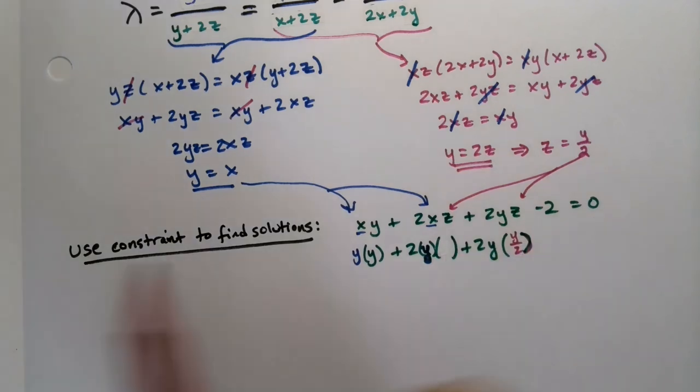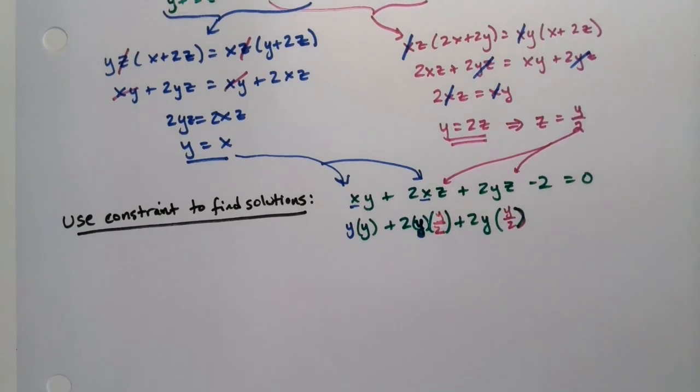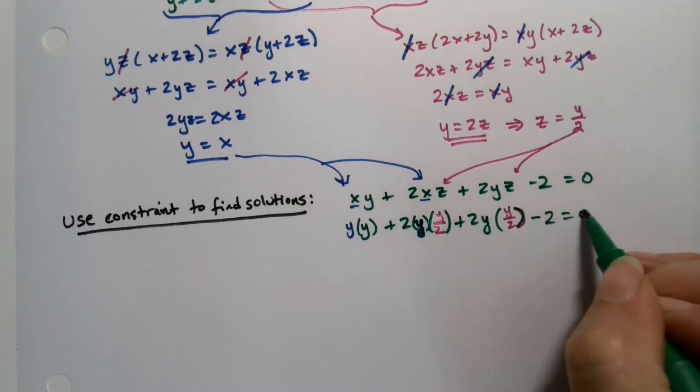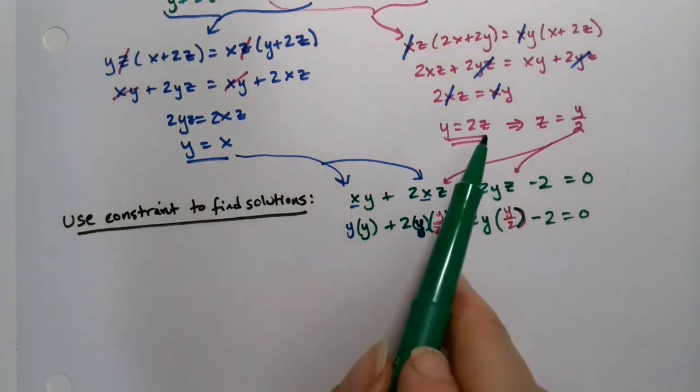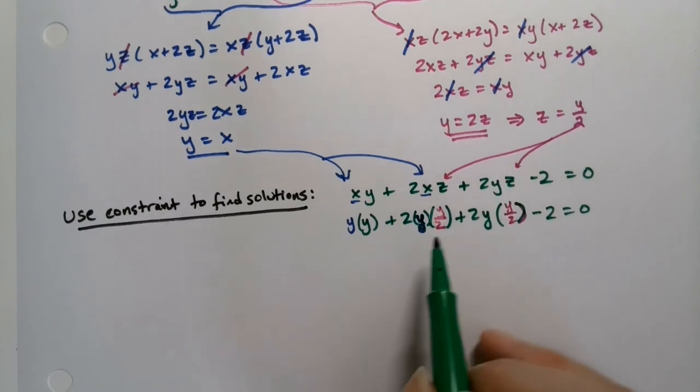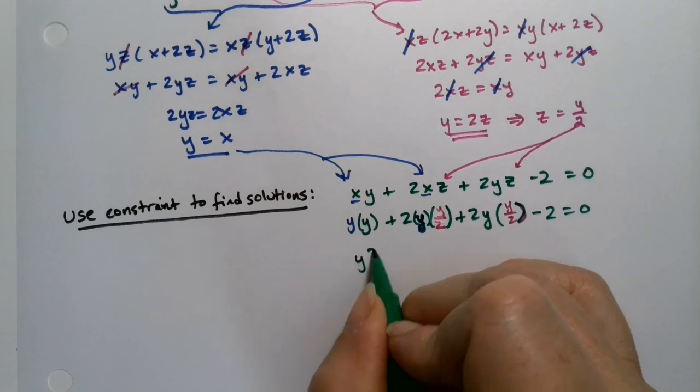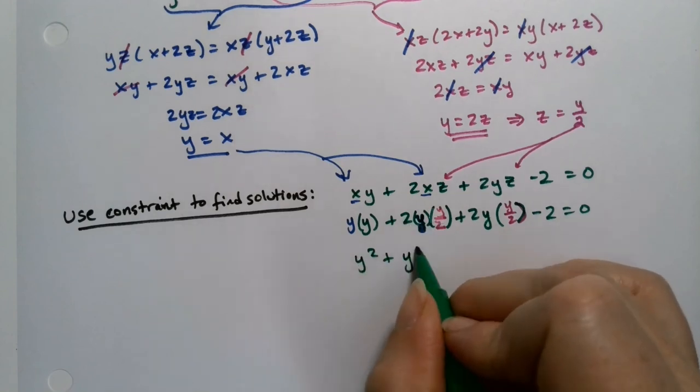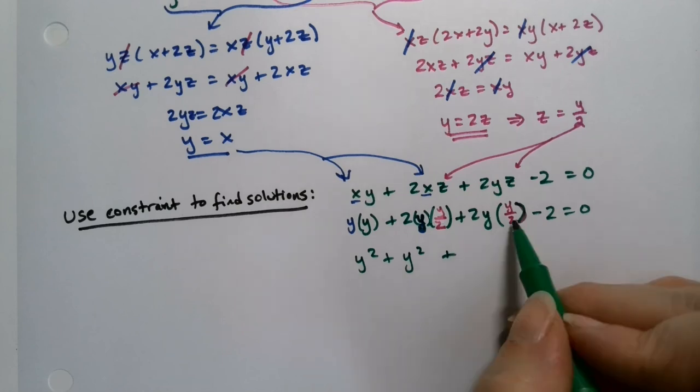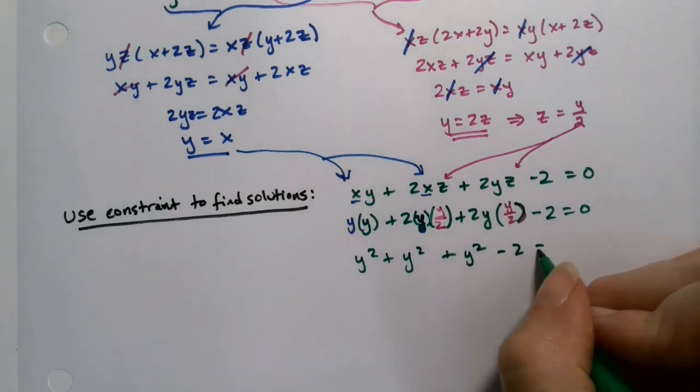So this is y squared plus, the twos are going to cancel plus another y squared plus the twos are going to cancel again plus another y squared minus 2 equals 0. So we have 3y squared minus 2 equals 0.